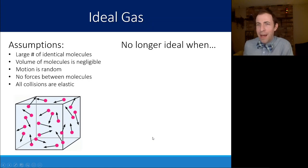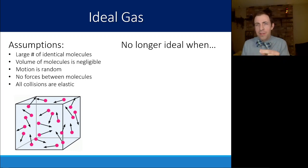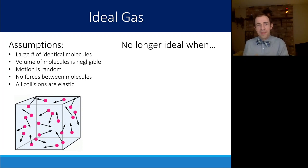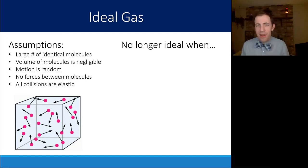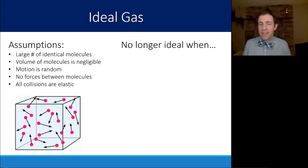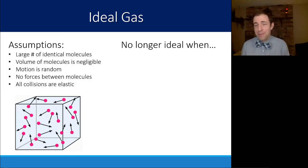To get us started, let's remind ourselves of the assumptions of an ideal gas: a large number of identical molecules, volume of the molecules themselves is negligible, the motion is random, there is no electric field pushing in one way over the other, there is no force between molecules, and all collisions are elastic. An easier way to think about this is to consider common scenarios where a gas would no longer be considered ideal.